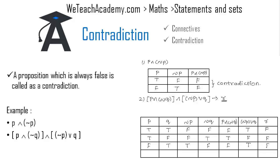If both p and q are false, then not p and not q would both be true. Hence p and not q would be false and not p or q would be true. In the last column, the truth value for r would be false.